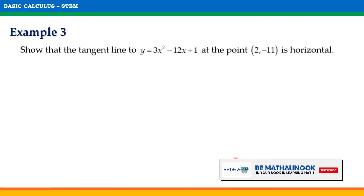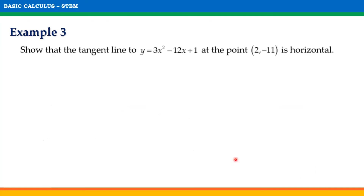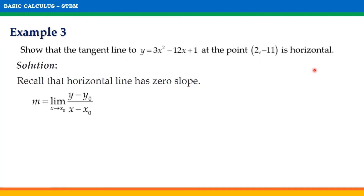For our last example, show that the tangent line to y equals 3x squared minus 12x plus 1 at the point (2, negative 11) is horizontal. The point of tangency (2, negative 11) is already given, so we do not need to solve for y sub 0. We need to show that the tangent line is horizontal. Recall that a horizontal line has zero slope, so we simply need to show that the slope equals 0.